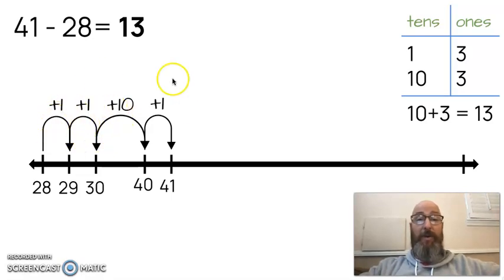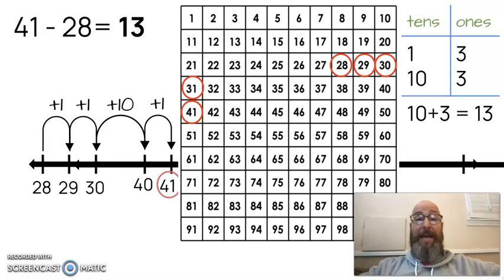I have 10, 11, 12, 13. If I'm looking on a hundreds chart, I can find that too. If I'm going backwards, I go 10, 11, 12, 13. It works. Let's try another one.